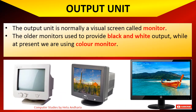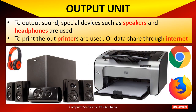The last topic of today's video is the output unit. The output unit is normally a visual screen called a monitor. In older days monitors used to provide black and white output, while at present we are using color monitors. To output sound, special devices such as speakers and headphones are used. To print the output, printers of different types are used. Optionally, output is directly published on a website or sent as a file via the internet. So here we complete this part of the chapter.